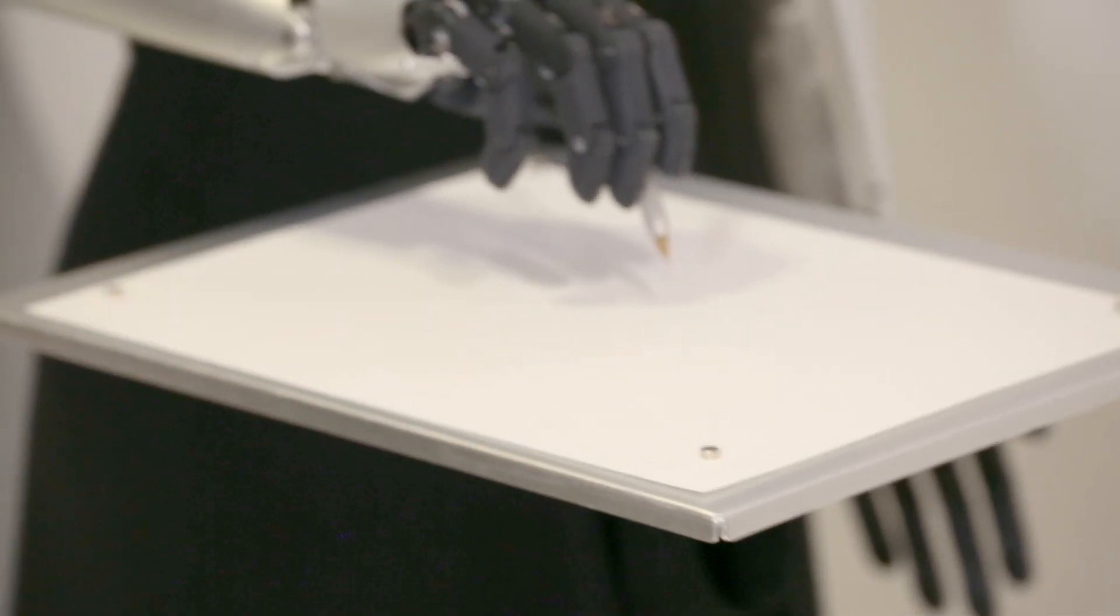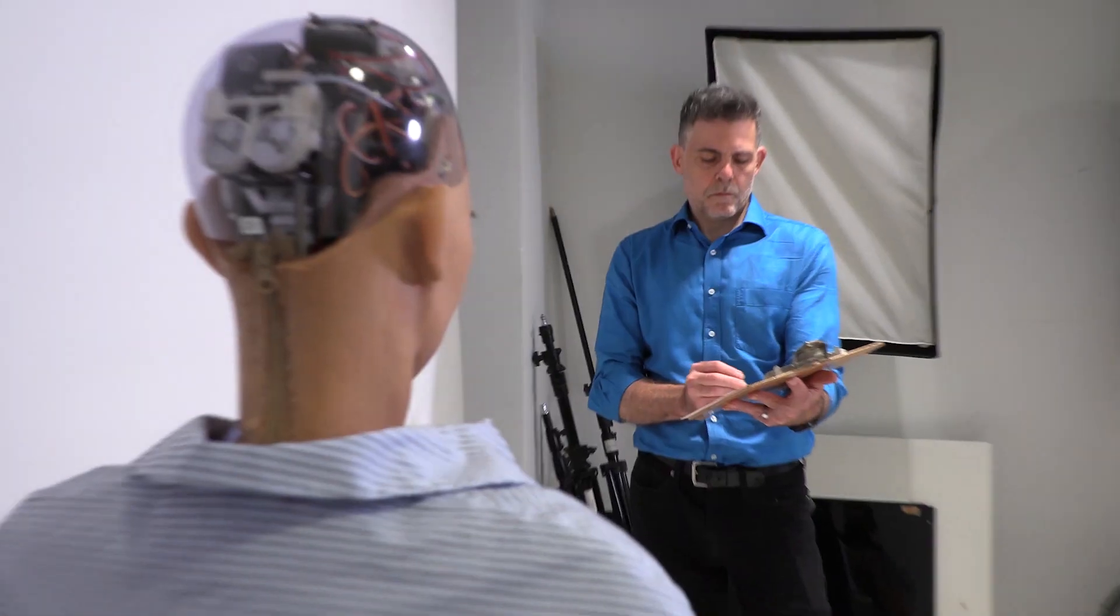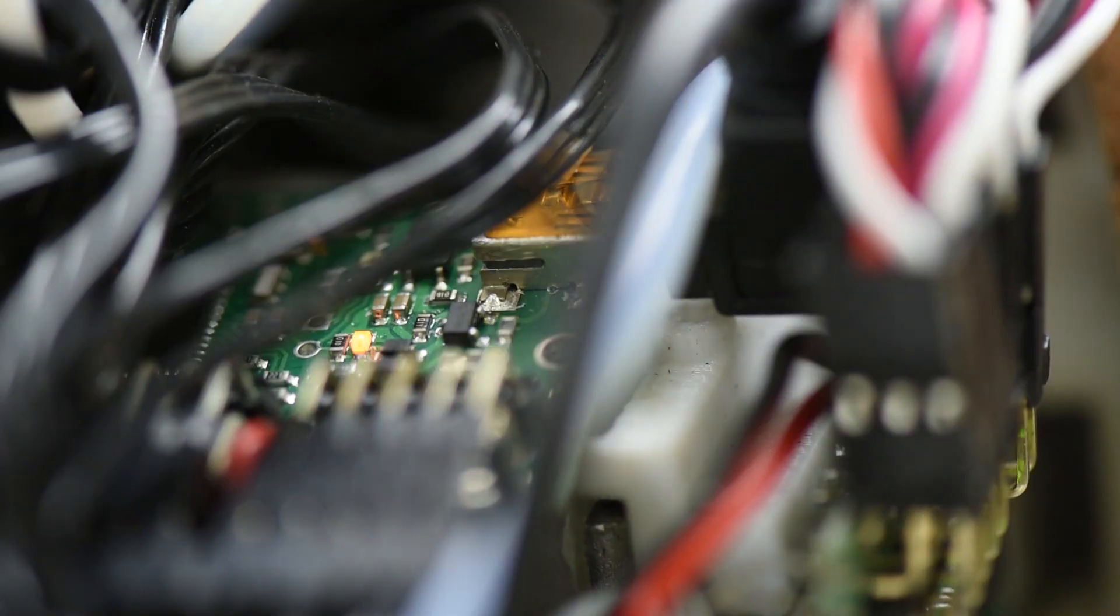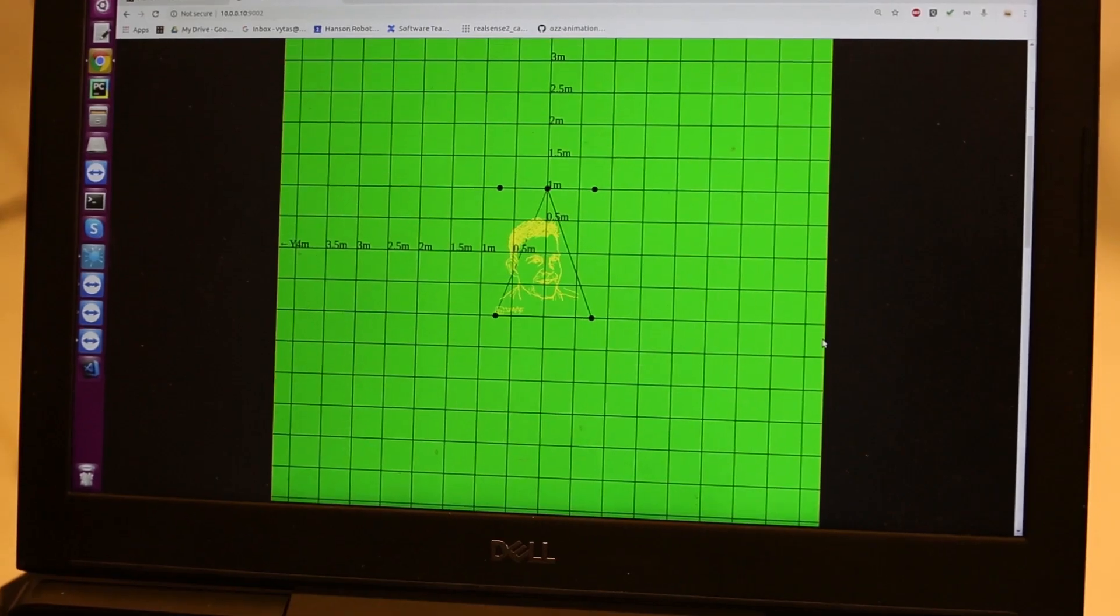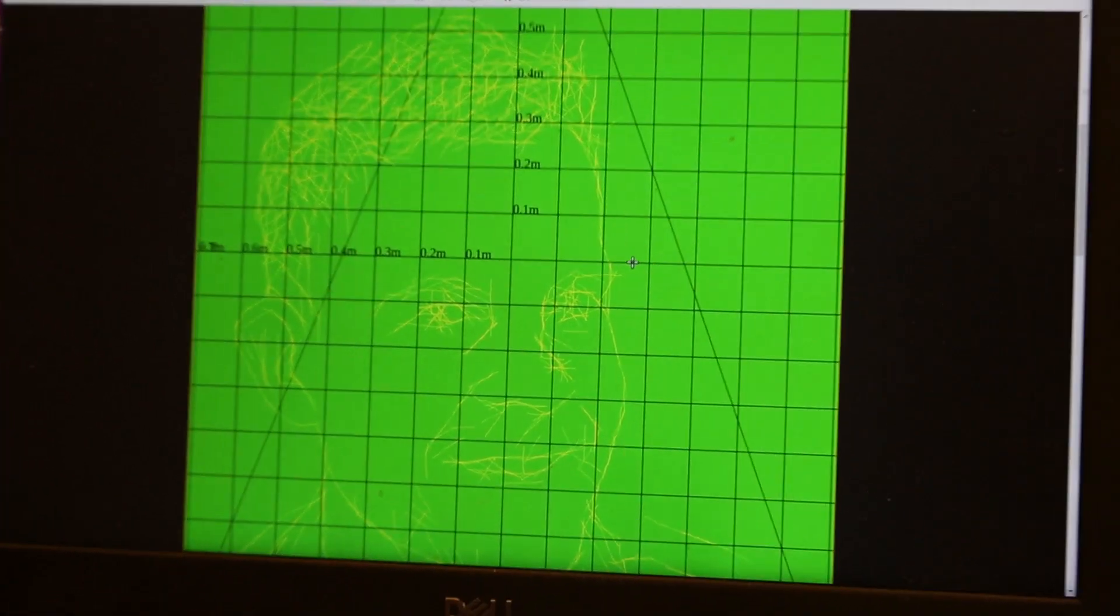Before Sophia ever puts pen to paper, she uses her eye cameras to take a photo of her subject, processes the photo to find the right balance between dark and light, and removes the background around the face.